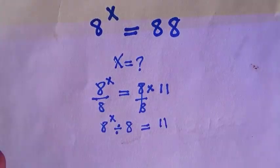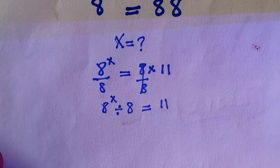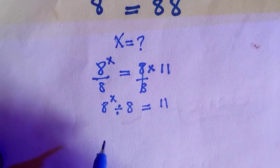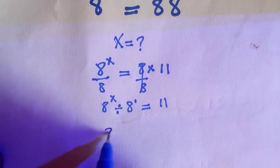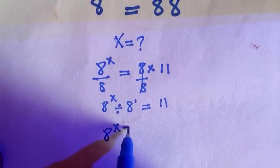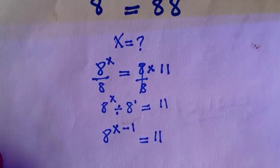Everything equals to 8. The law of indices says we have the same base and different powers separated with division, so we are going to take negative. Then it becomes 8 raised to the power of x minus 1 equals 11.